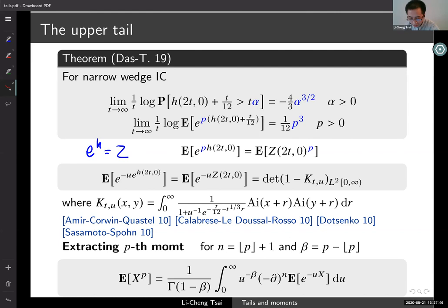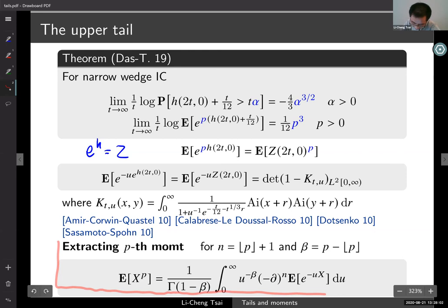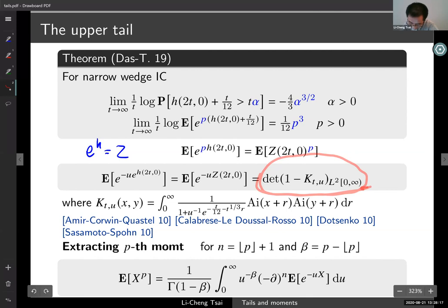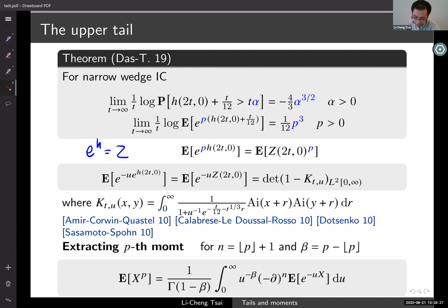To extract a moment from a Laplace transform for integer p, you take derivatives in u and set u equal to zero. For general positive real p, there is a less standard formula — an analog of that fact — for extracting non-integer moments from a moment generating function. The proof is actually very standard. What this allows you to do is take an explicit formula of the moment generating function expressed as a Fredholm determinant, plug it into this formula, and develop a perturbative series from which you can do all kinds of analysis, eventually leading to the result.